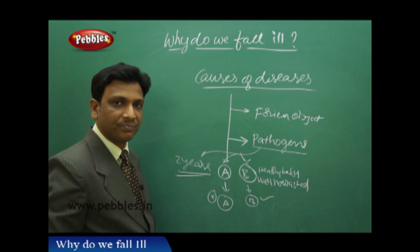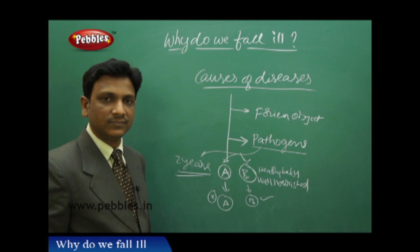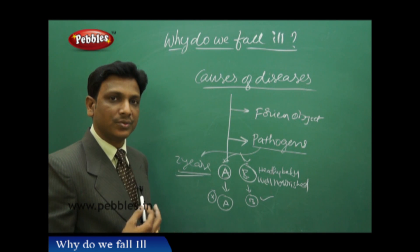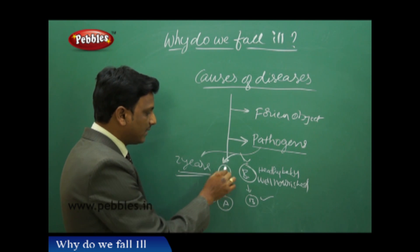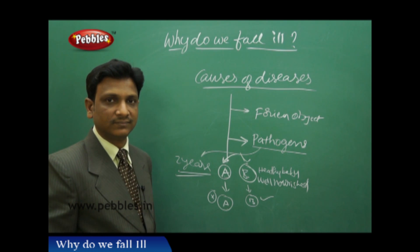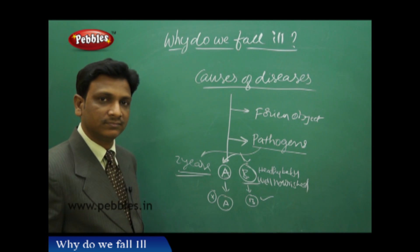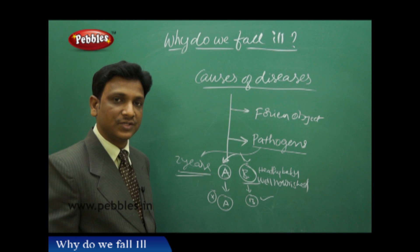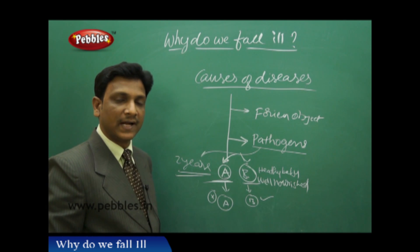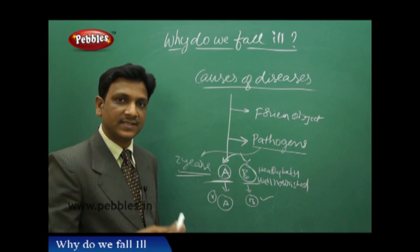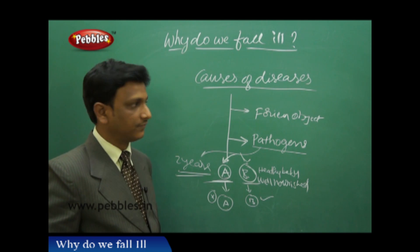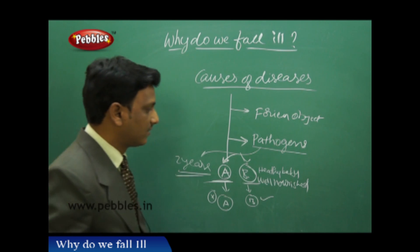In contrast, baby A is poorly nourished — a balanced diet has not been given, so this baby has less immunity and is more susceptible to disease. Baby B may come from a wealthy family with enough money and resources to provide all the nutrients, whereas baby A suffers from poverty and lack of food, leading to poor health. This is the secondary cause of disease — poverty and poor nourishment — which is a social cause.